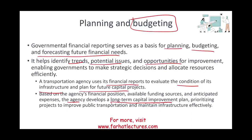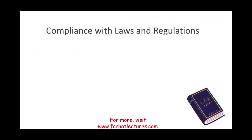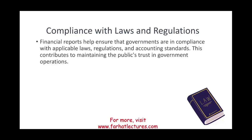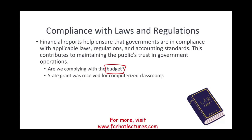Compliance with laws and regulations is another objective: financial reporting ensures the government is in compliance with laws, regulations, and accounting standards, which contributes to maintaining public trust. The government commits to a budget — specifying how much they will spend, how much revenue they will generate, and what taxes will be imposed — and sticks with it. For example, if a state grant was received for computerized classrooms, financial reporting shows whether those funds were actually used for that purpose.